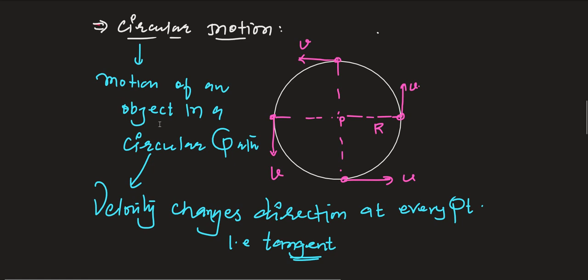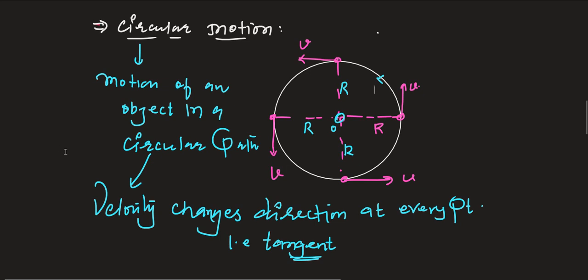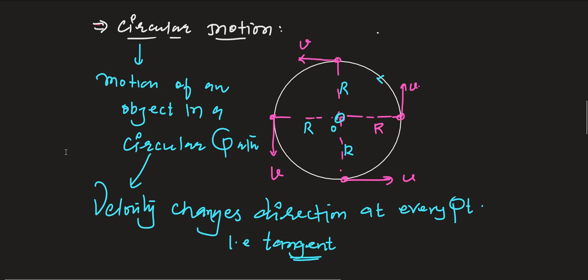R is the radius of the circle, and one more thing — radius is the same at every point. You can see here, radius is the same at every point in a circle. This is the point on the circle, this is the center. An object is moving this way; at every point its velocity changes its direction. So, this is the proper way to define circular motion.